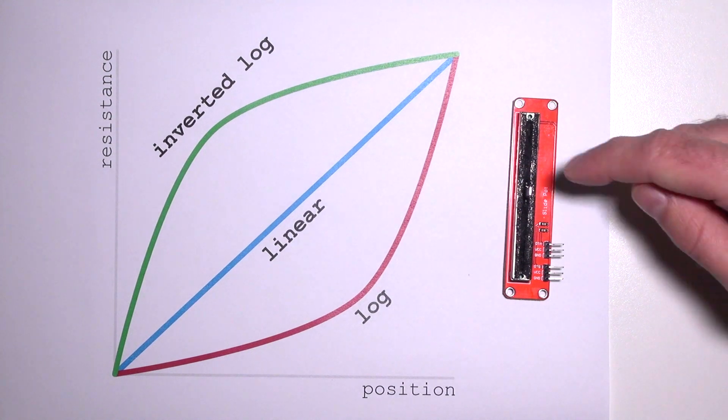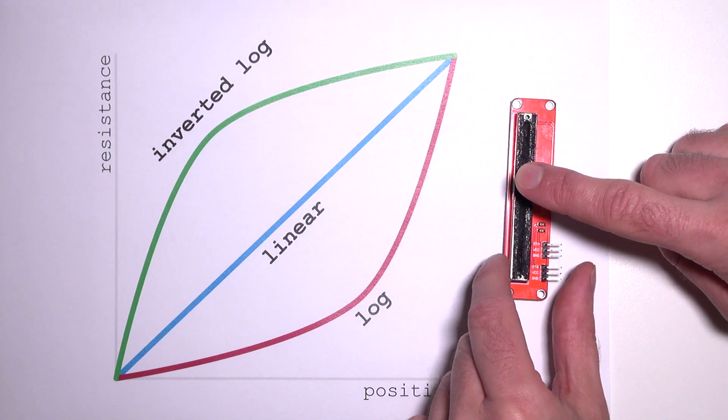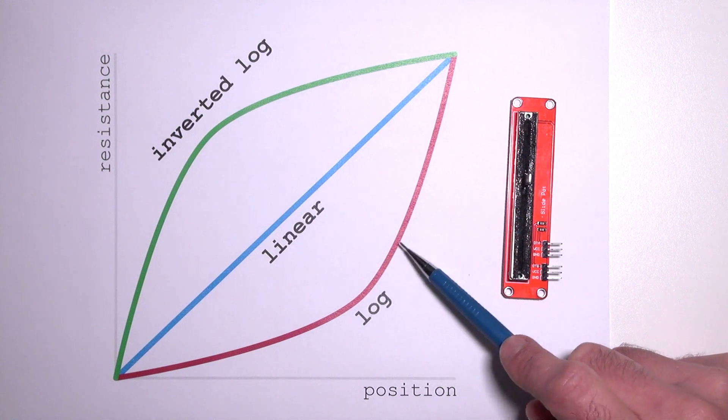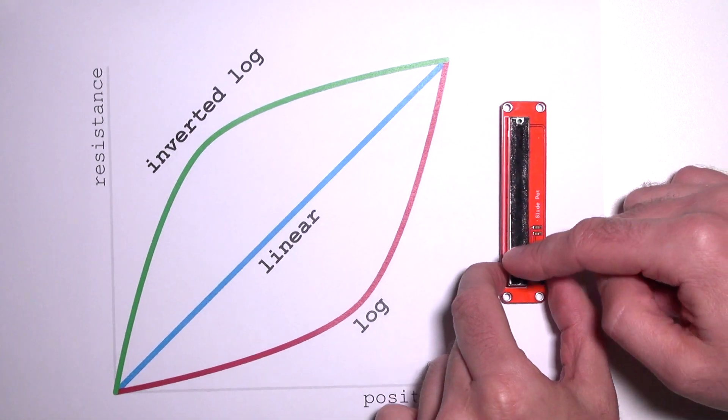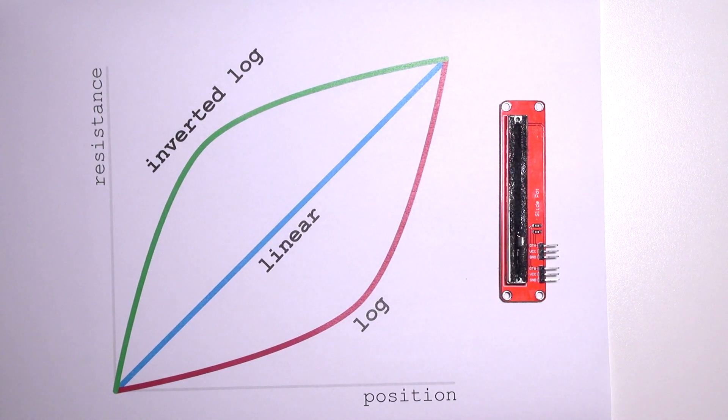So when I move my slider from the center to the top, you see more resistance is added. And when I go to the bottom by the same amount, you'll see that the resistance gets very slowly upwards. So keep this in mind when you buy a sliding potentiometer or a potentiometer in general, that you buy the right one.